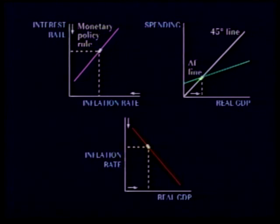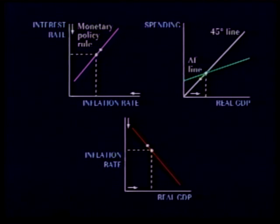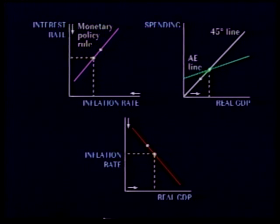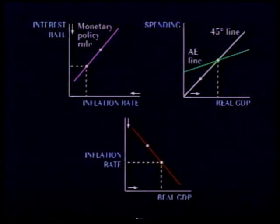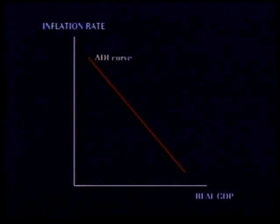Similarly, when the inflation rate falls, the eventual result is a rise in real GDP. Thus, the relationship between inflation rate and real GDP can be represented as a downward sloping curve.